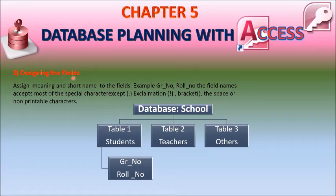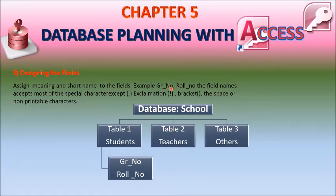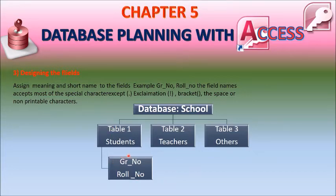Designing the fields: Assign a meaningful and short name to each field. When giving a field name in a table, always use an underscore between words — for example, GR_number or Roll_number. You can use only underscores or leave a blank space. Do not enter full stops, exclamation marks, brackets, or other non-printable characters in the field name.